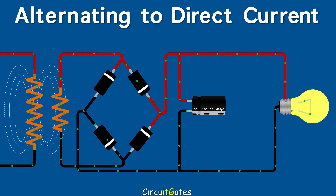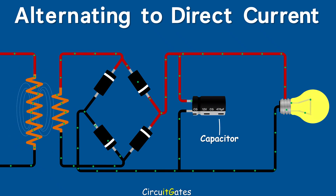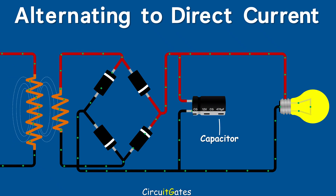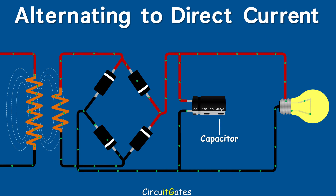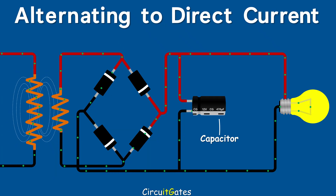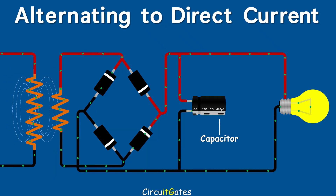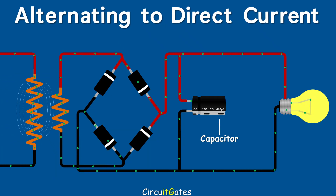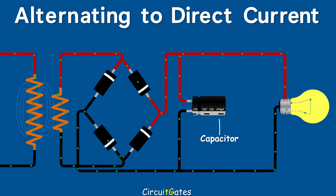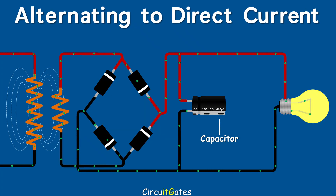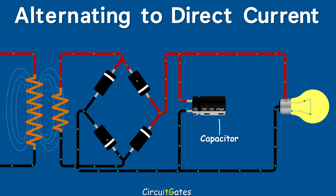When using a capacitor filter, we connect a capacitor in parallel with the load. In every half-cycle of AC electricity, during an increase in voltage, the capacitor charges. And when voltage starts to decrease, the capacitor discharges through the load, eliminating the fluctuations in the voltage to a relatively smooth voltage.